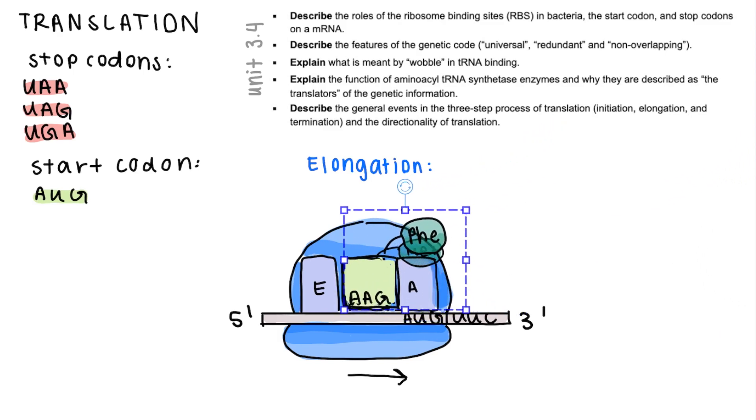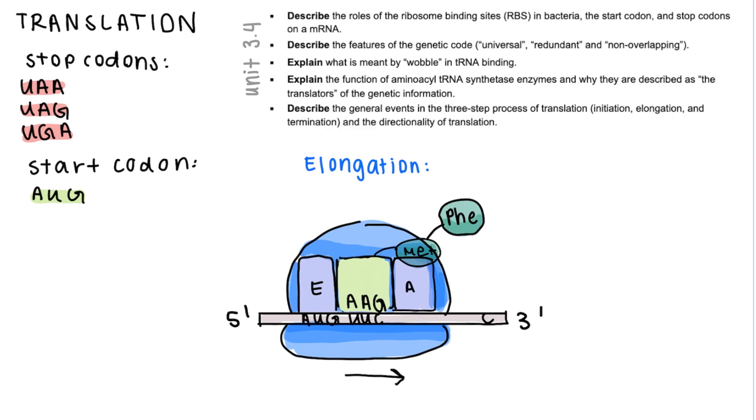When the tRNA corresponding to the second codon moves to the P site, the bond between methionine and the first tRNA will turn into a bond between methionine and in this case phenylalanine. And the tRNA that was originally carrying the methionine will move to the E site and be ejected. Another tRNA comes to replace the place of the previous one on the A site and this process continues elongating the amino acid chain. This is referred to as elongation.